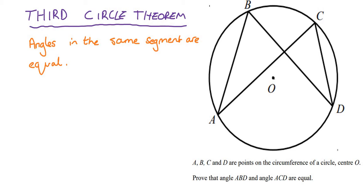So let's take a look at this one. What does it say? It says angles in the same segment are equal. And let's take a look at the wording of the question. It says A, B, C and D are points on the circumference. Prove that angle ABD and angle ACD are equal.